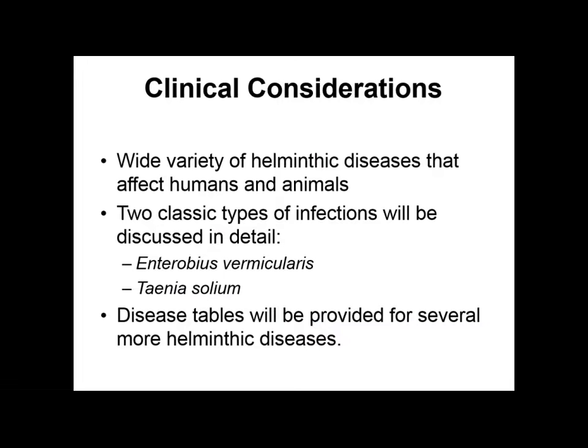There are a lot of different ways to mix and match helminthic life cycles. Sometimes eggs mature on the human; sometimes they're produced in the human and mature outside; sometimes they involve a secondary host. The two classic infections we will discuss in detail are Enterobius vermicularis and Taenia solium. Disease tables will be provided for several more helminthic diseases, but these are the two I want you to focus on for exams.